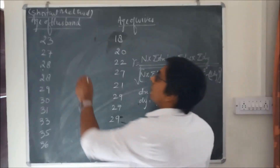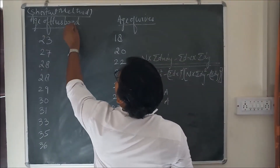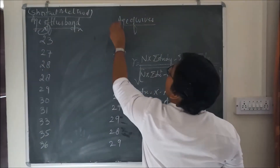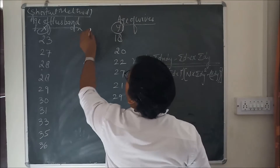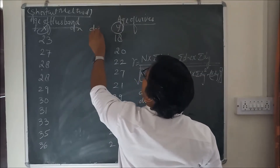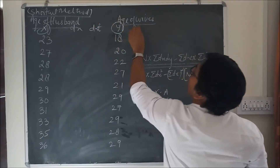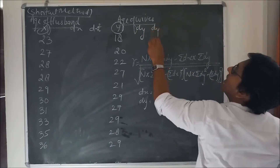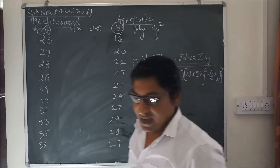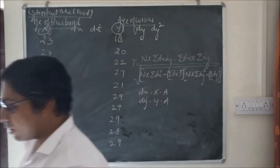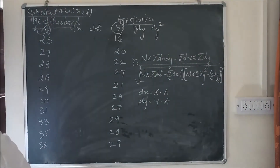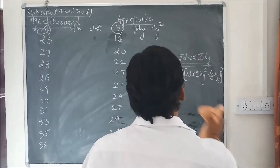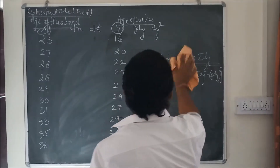First of all we set up the table with columns: x, y, dx, dx squared, dy, dy squared, and dx·dy. dx and dy are calculated with the help of an assumed mean, that is a.